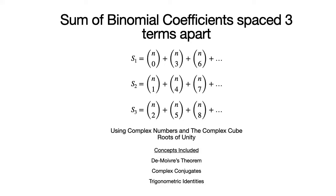Hello. Today we have a delightful question that concerns the sum of binomial coefficients spaced three terms apart. This question is taken from the book Higher Algebra, authored by Barnard and Child and published by Arihant Publications. More specifically, it is taken from chapter 5 on complex numbers. The fact that the solution of this problem requires us to make use of the theory of complex numbers is truly remarkable.